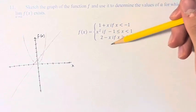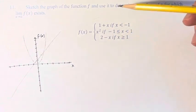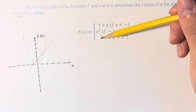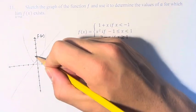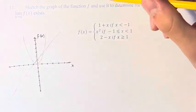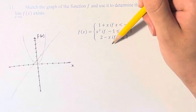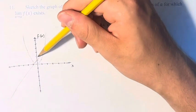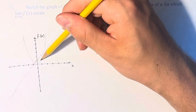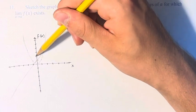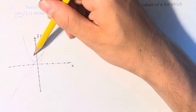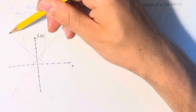And finally, we have 2 minus x. So again, this is a line, so this is the y-intercept of 2. And the coefficient for x this time is negative 1. So that means you go over to the right 1 and then down 1, to the right 1 and then down 1, and so on. And therefore, the function looks a little bit like this.